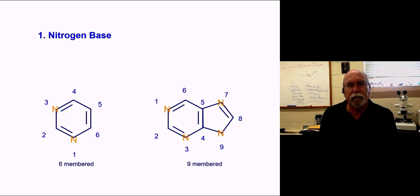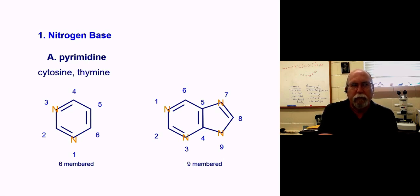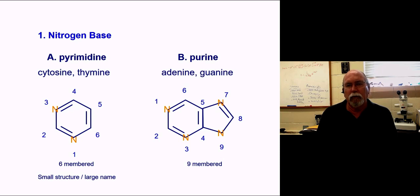Let's start with the nitrogenous bases which form into two groups. One is a six-membered ring - the small part with the large name - these are pyrimidines, which include cytosine and thymine. Then there's a nine-membered ring - the larger structures - these are your purines. The two purines we have are adenine and guanine.